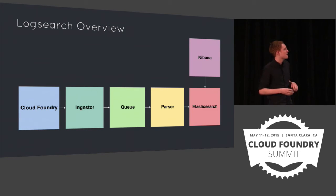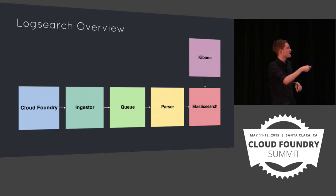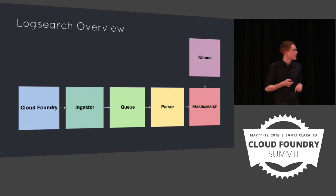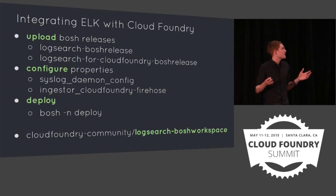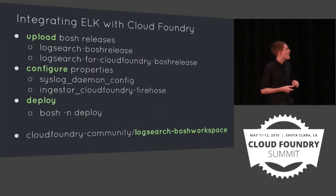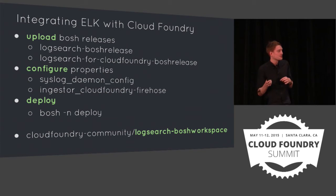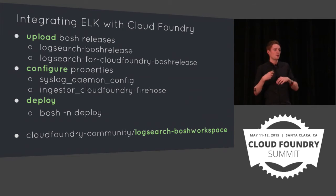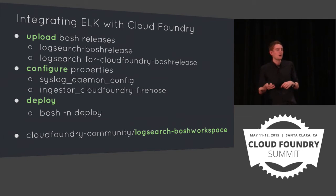So that's the system as a whole: we export logs from Cloud Foundry, they get ingested, passed through the queue, parsed and formatted, and end up in Elasticsearch. How do you actually set this up? The good news is it's not too difficult, assuming you have a little bit of BOSH knowledge. It's really worth investing time in becoming more familiar with BOSH, because it helps with deploying a complicated stack like the ELK stack and makes the deployment and management much, much easier.